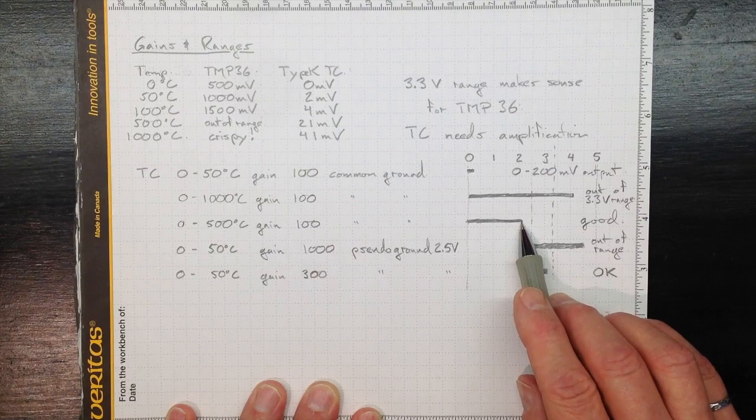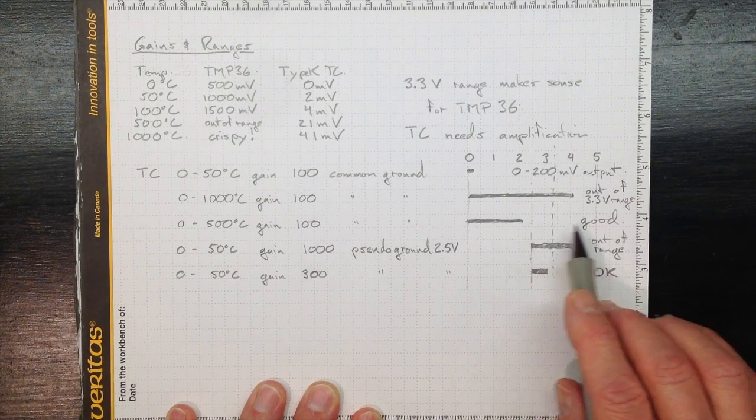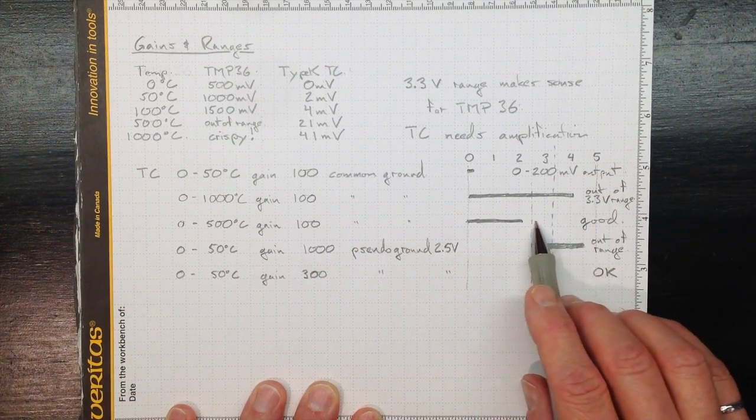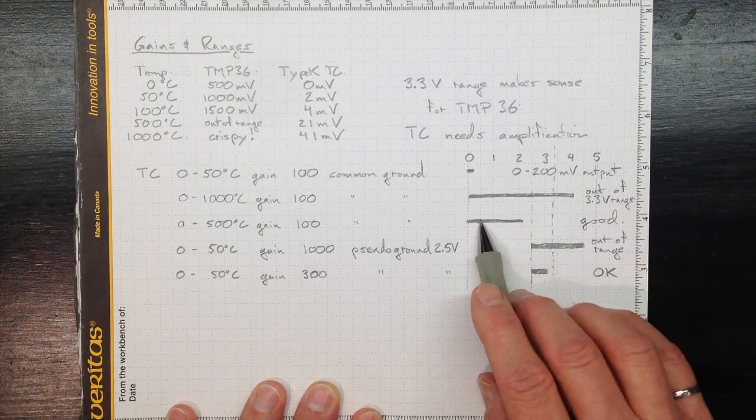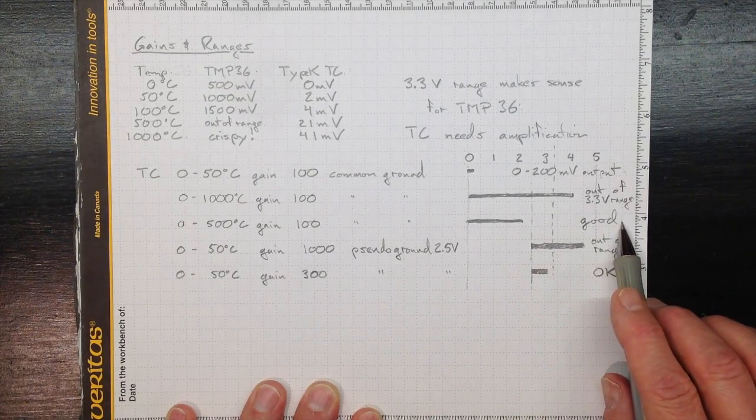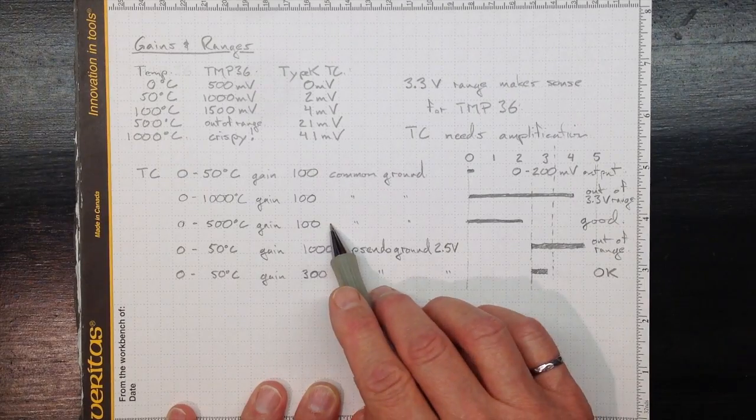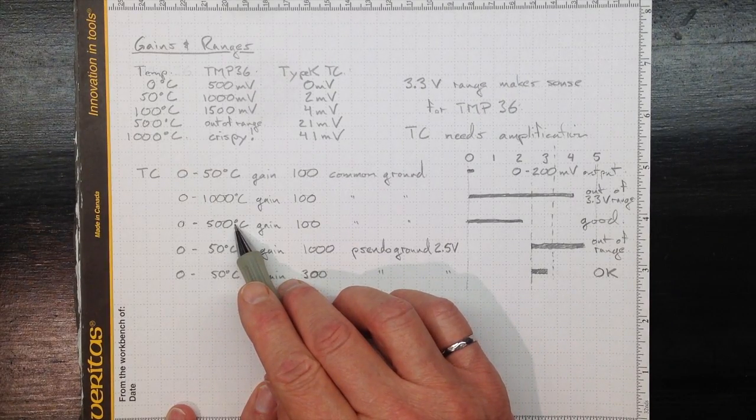We'd get up to a little over two volts input. We'd be making good use of the range. We're using about two-thirds of our range in there, so that's giving us good resolution. That's a good choice for measuring zero to five hundred degrees Celsius.